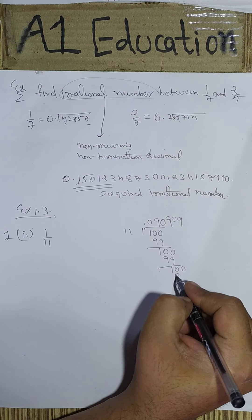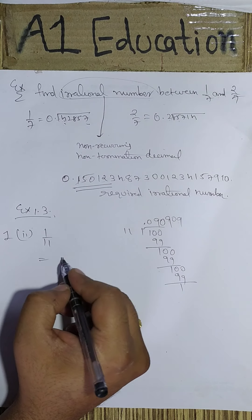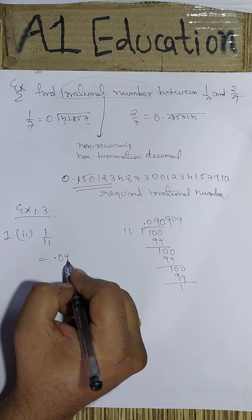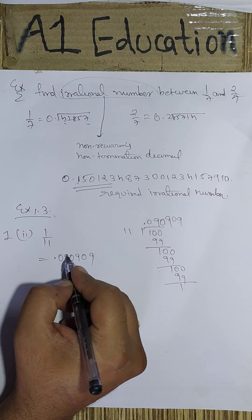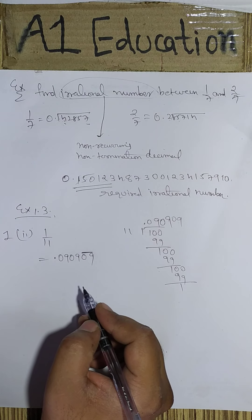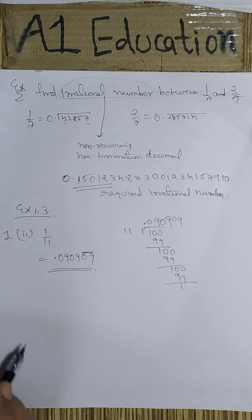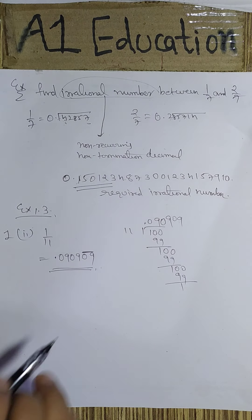Here, if we see this number on division, we obtain 0.090909. We see that 09 is continuously repeated.